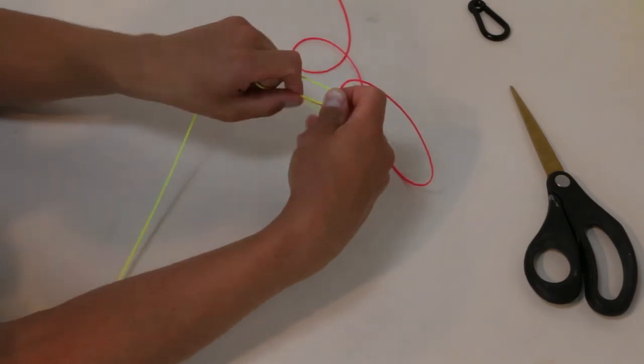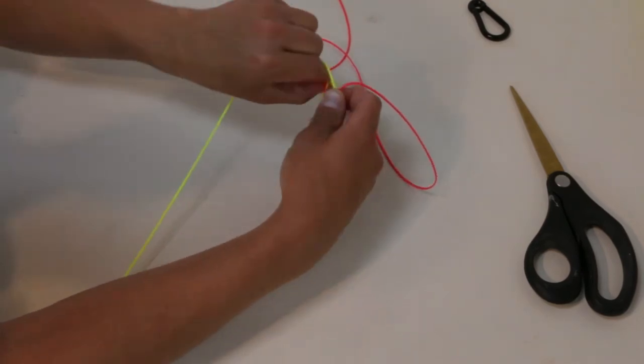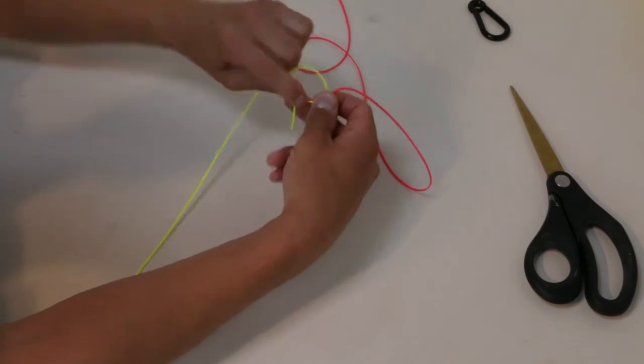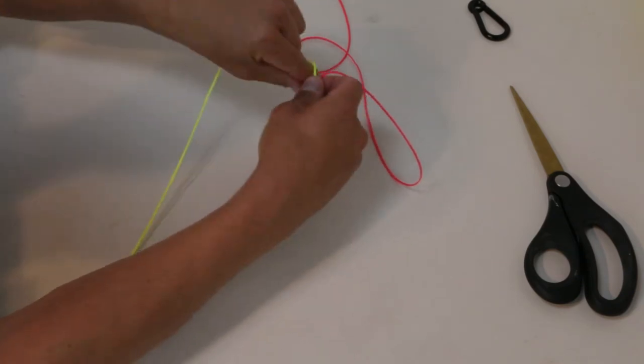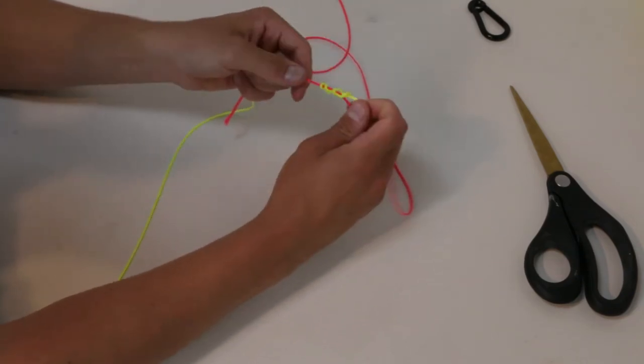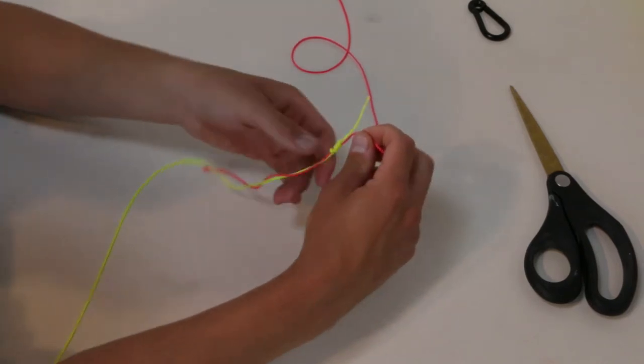This time it looks like a nine. Pinch the intersections and go through the loop one, two, three, four, five times. Snug that down. Don't tighten it yet.